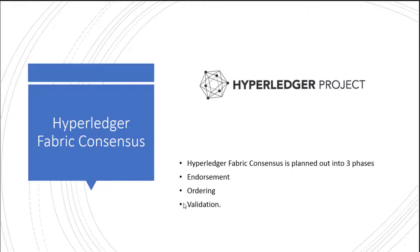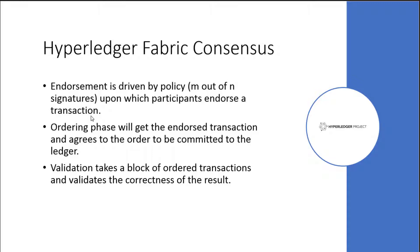Hyperledger uses an interesting approach where a lot of blockchains will go ahead and order before they endorse it. Fabric approaches it a little differently. Endorsement is driven by policy - based on the number of signatures and what participants endorse a transaction. The ordering phase gets the endorsed transaction and agrees to the order to be committed on the ledger - so it's endorsed before it's committed. Then validation takes that block of ordered transactions and validates the correctness of the result.